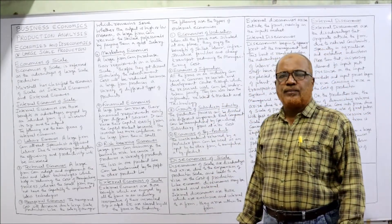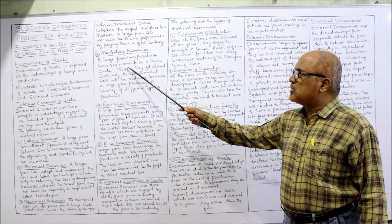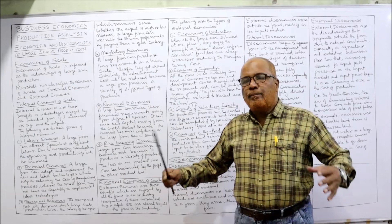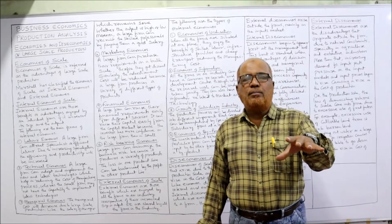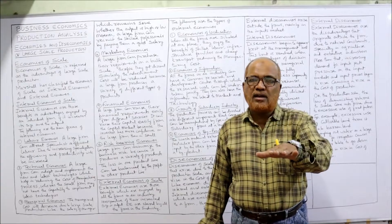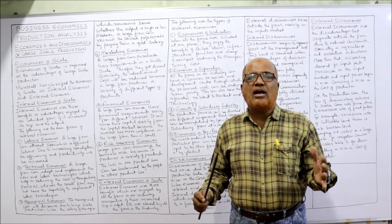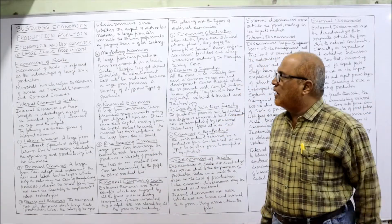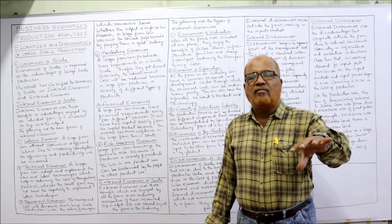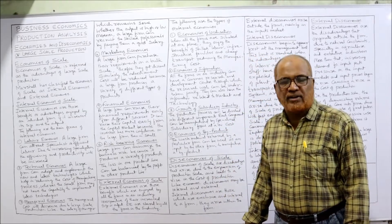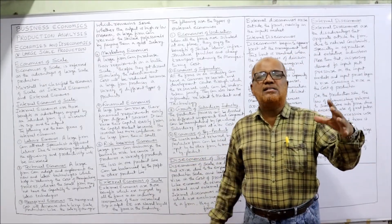Next are marketing economies. A large firm can purchase its requirements on a bulk scale. When the business purchases material in bulk quantity, it gets discounts, the material cost decreases, cost of production decreases, and profitability increases. Similarly, advertisement costs will also be reduced because a large firm producing a variety of different products can advertise all products in one advertisement — this way they get economies of advertisement.